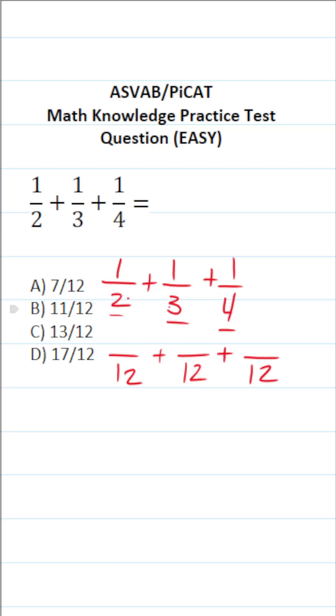To write 2 as 12, we would have to multiply it by 6. We're also going to do that to its numerator. 2 times 6 is 12. 1 times 6 is 6. To write 3 as 12, we would have to multiply it by 4. We're also going to do that to its numerator. 3 times 4 is 12. 1 times 4 is 4.